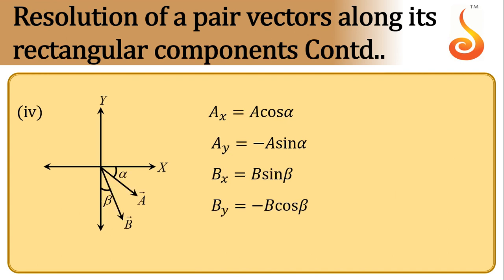What if I take vector A in the fourth quadrant, subtending an angle alpha with the x-axis? The x component is positive while y component is negative. So Ax is A cos alpha and Ay is minus A sin alpha.